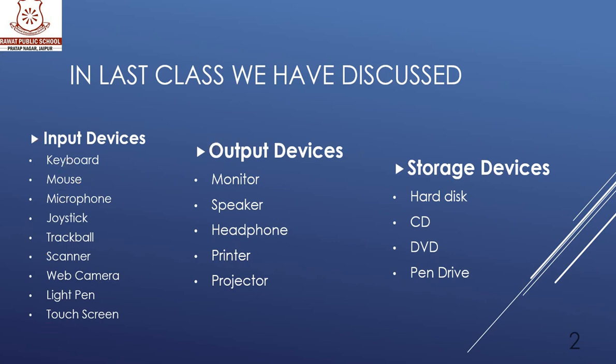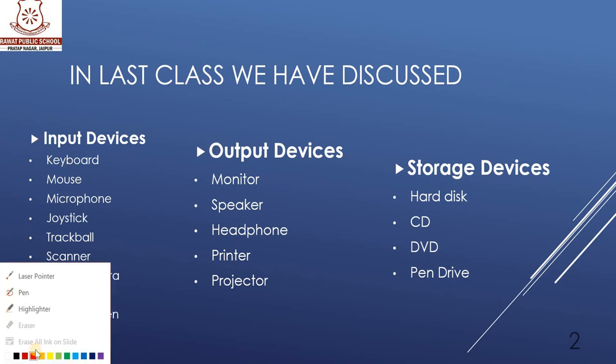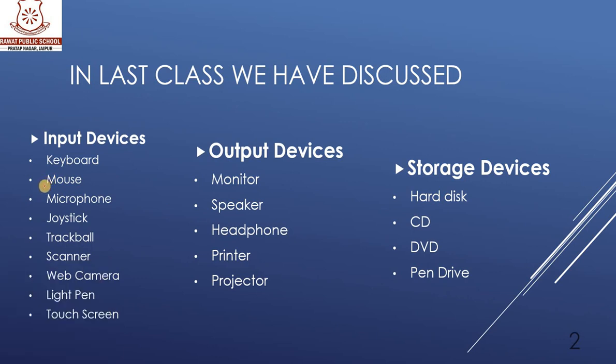The second one is mouse. Mouse is used to select objects, open files and folders, and point at and move objects on a computer. It is also an input device.